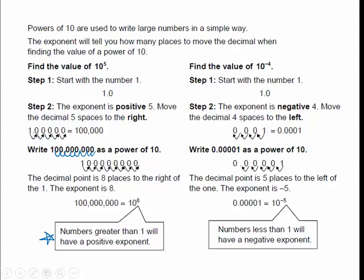With a negative exponent, you move to the left. Start by writing your 1, then move 4 places because it's 10 to the negative 4th, and then put your decimal in front. If you have to write a decimal number as a power of 10, count the places — 1, 2, 3, 4, 5 — that's 5 bumps, 5 places. Since it's a tiny number the exponent would be negative 5, so 10 to the negative 5. Numbers less than 1 will have a negative exponent.